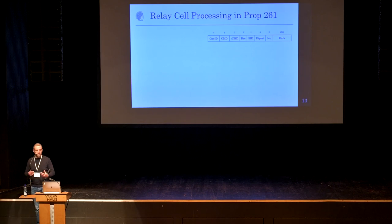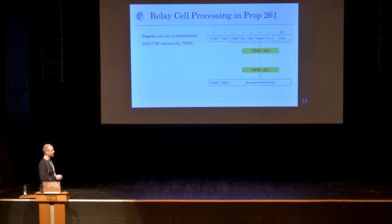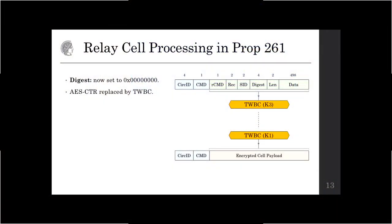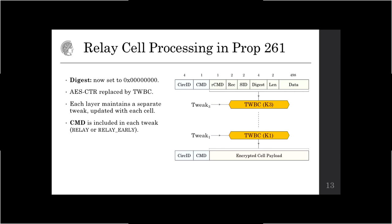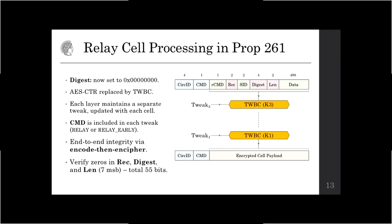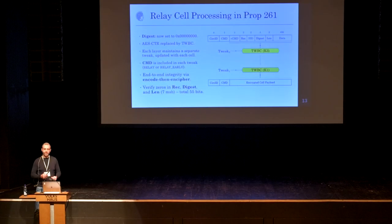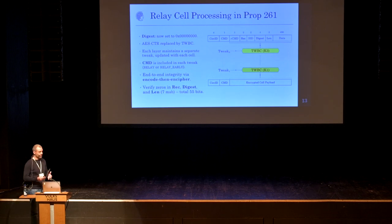In Proposal 261, in terms of encoding the data, the only difference is that the digest will be set to all zeros. Encryption is replaced with the tweakable wide block cipher, which takes an additional input called the tweak. Each layer uses a different tweak, and the tweaks are updated for every cell. The command field and the cell header are included in this tweak. End-to-end integrity is achieved via an encode-then-encipher approach: upon decryption, the last node in the circuit verifies the recognized field, the digest field, and the seven most significant bits of the length field, checking that these are all set to zero. This works because of the tweakable wide block cipher, which behaves like a random permutation.